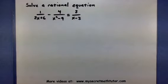So looking at our example here, I have 1 over 2x plus 6 minus 4 over x squared minus 9 equals 7 over x minus 3. So I first need to find my lowest common denominator. Now in order to help me out, it's a good idea to take your denominators and see if they can be factored in any way.